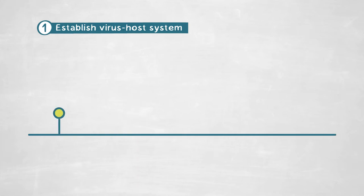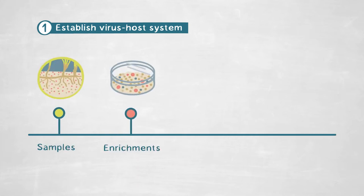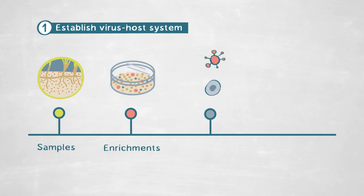For this, first we had to go to the field and take environmental samples to try to enrich archaeal viruses. Because chronic infections are rather rare and very complicated to detect, we had to develop specific methods to detect them in these samples. We went to the field and took environmental samples to generate enrichments of viruses that infect archaea and produce chronic infection.